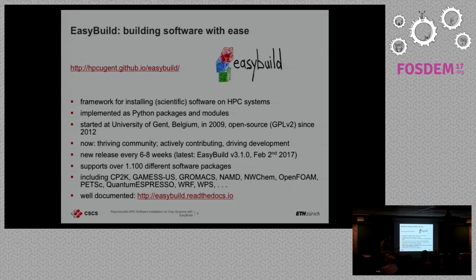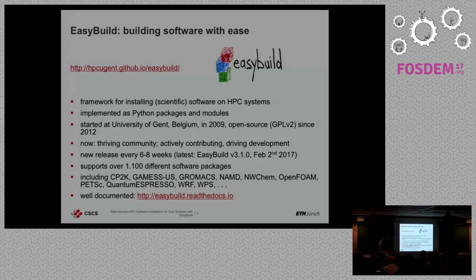EasyBuild started at Ghent University in 2009 and has been open source since 2012. Now we have a community and a stable version released every two weeks. From my experience, we can always use the new version — I won't say we had zero regressions, but every time we had one it was very small and fixed very quickly. So it is something you can really use in production, even for large-scale systems. This is my word as group lead of scientific computing support at CSCS.